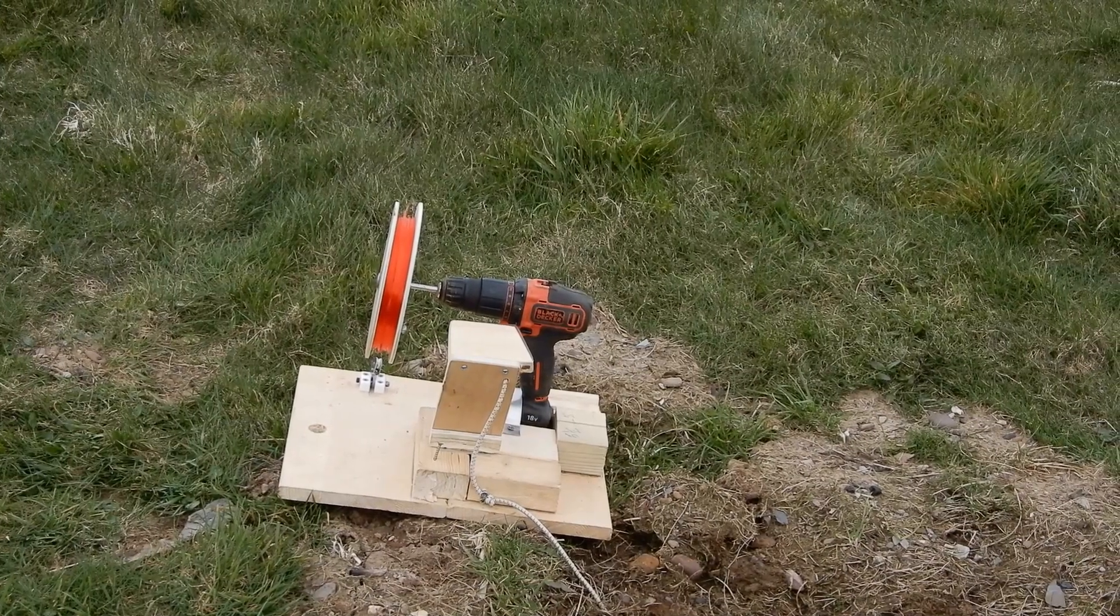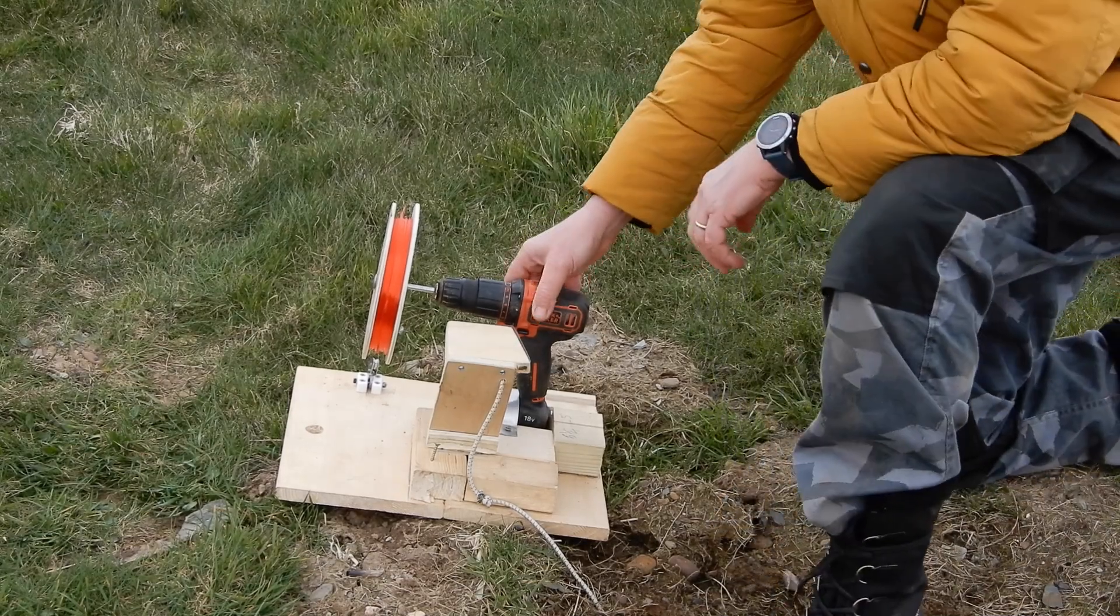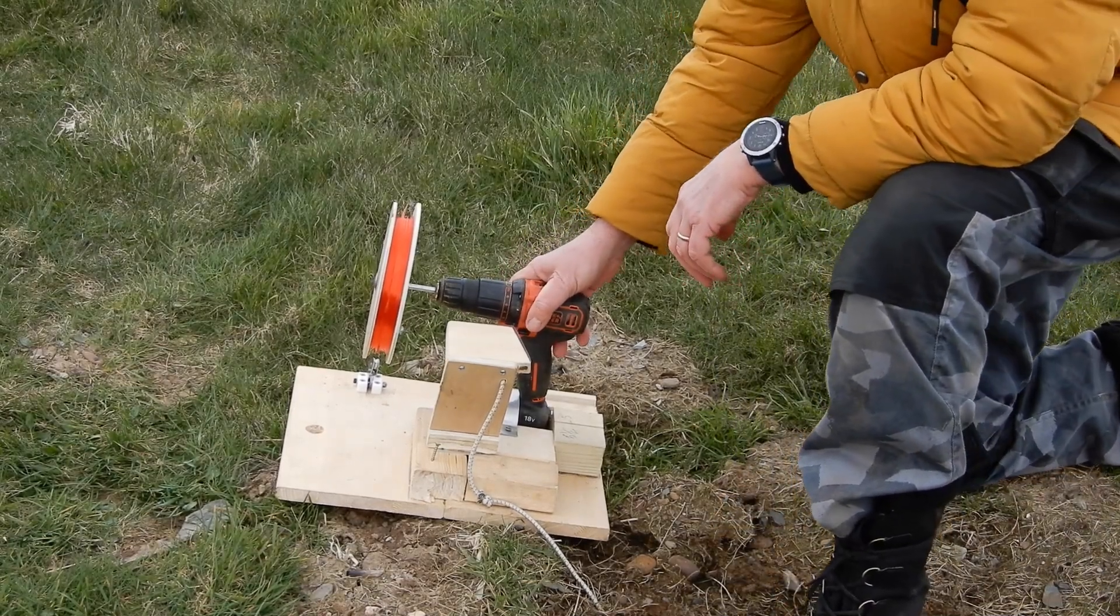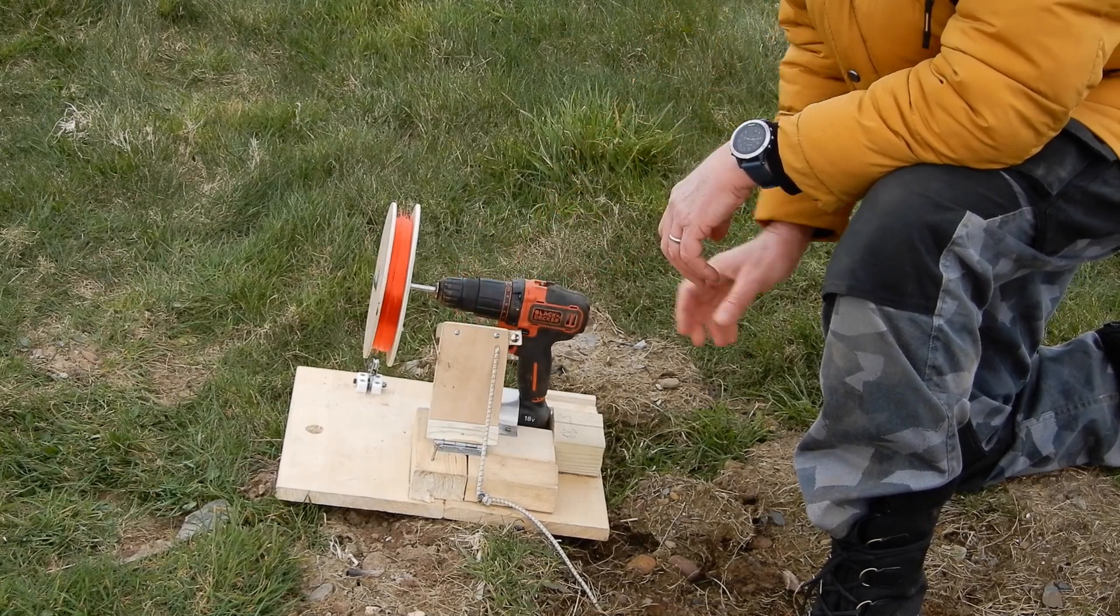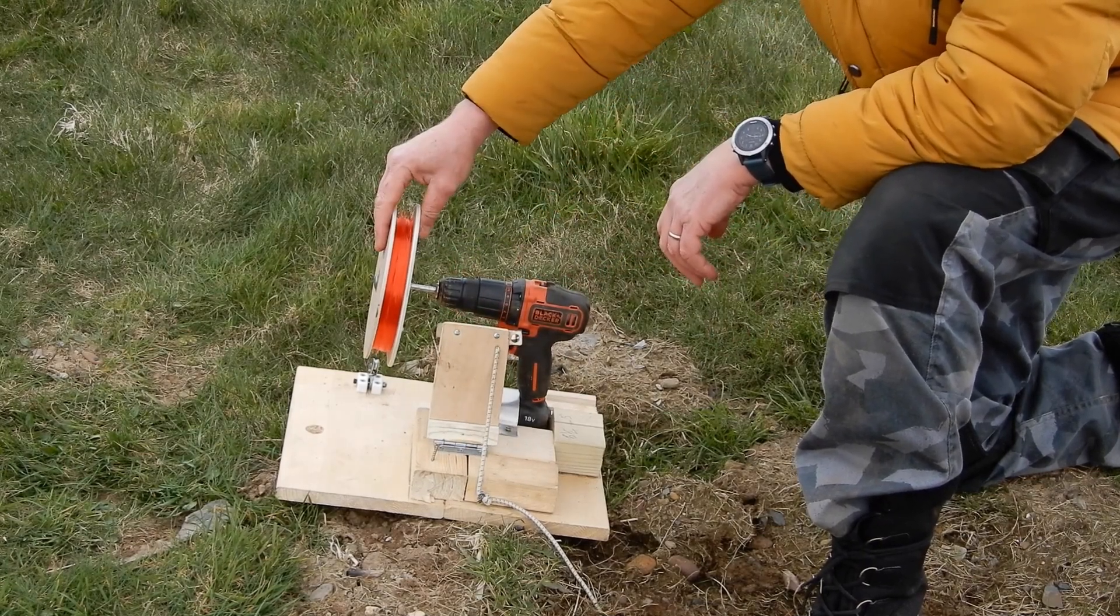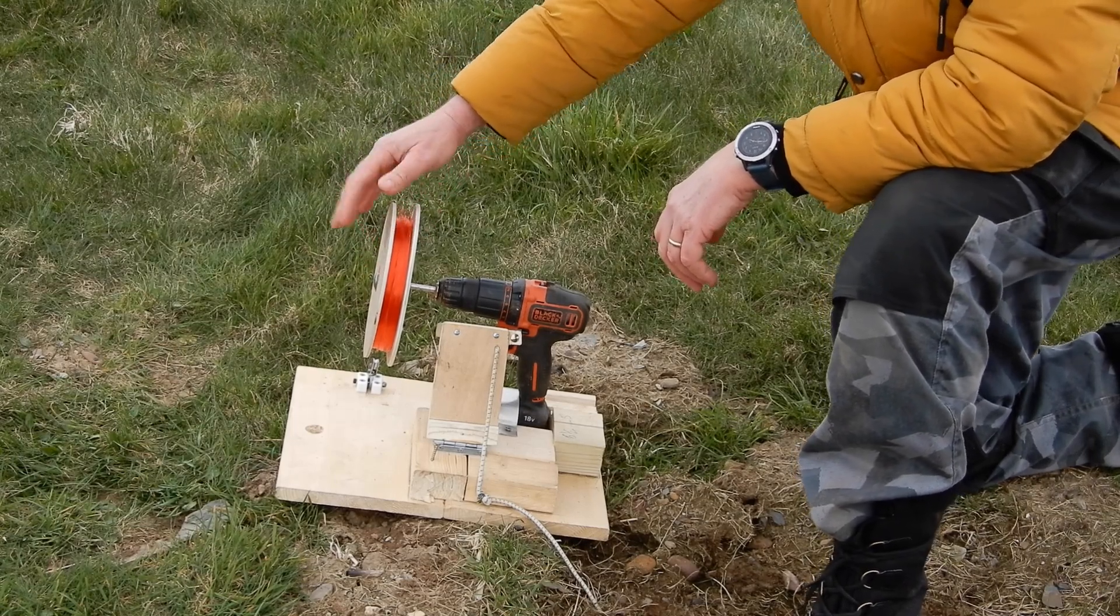So there we go. This is just a cheap Black & Decker 18 volt drill. I've made myself a pedal for the spring return. I uprated the drum. The drum's internal diameter is now seven and a half inches.